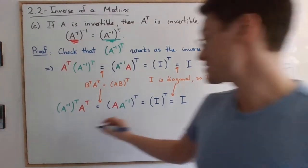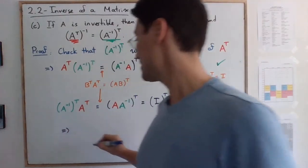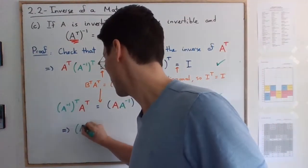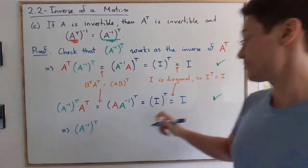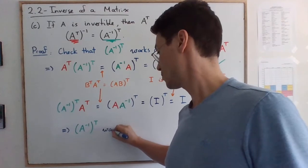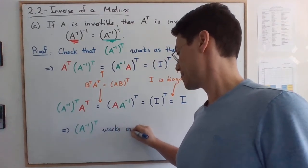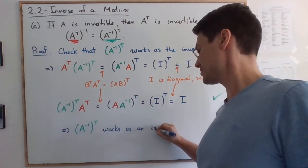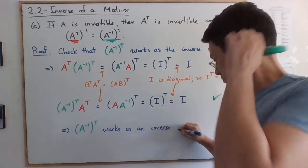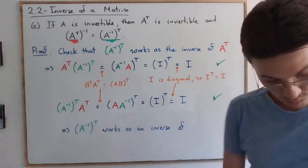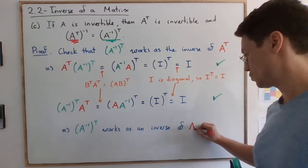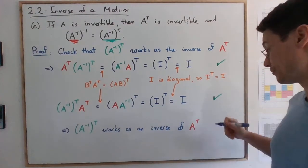So that's it. What you proved here is that your candidate, (A^-1)^T, works as an inverse of A^T. And this is what you wanted to prove.